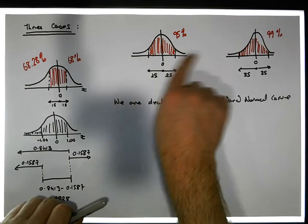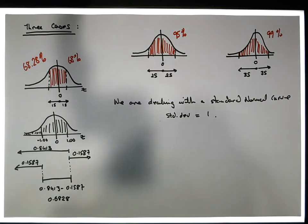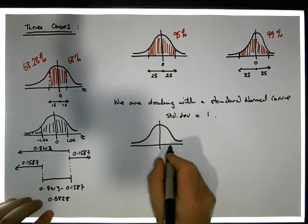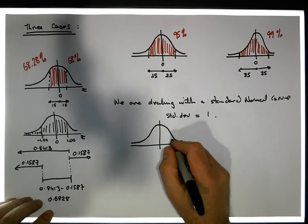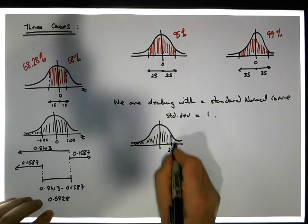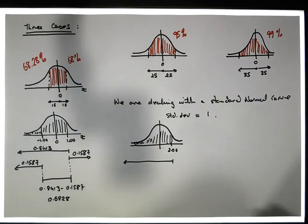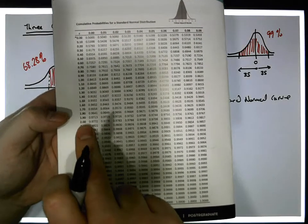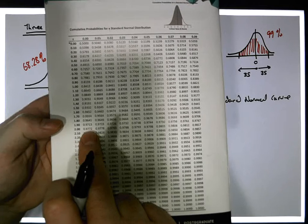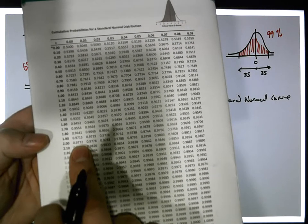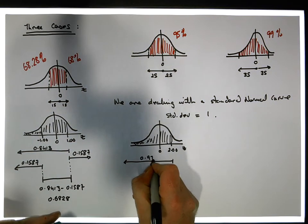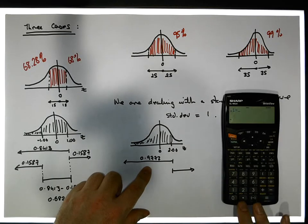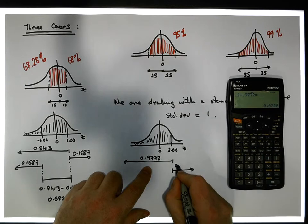Now, what about two standard deviations? We're going two standard deviations out, going out to z = 2.00. The question is: what's the area from here all the way down? The area from here down can be calculated using our tables. Two standard deviations is z = 2.00. Looking that up, it gives me 0.9772. So this area is 0.9772, which means the area in the right tail must be 1 minus 0.9772, which gives us approximately 0.0228.